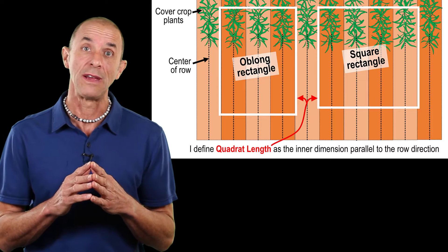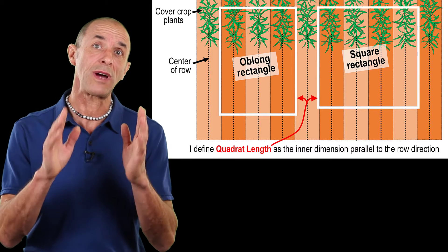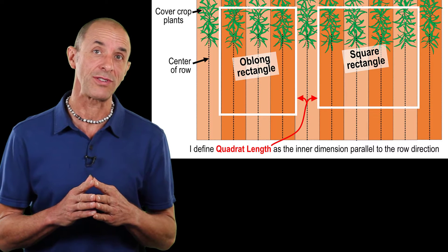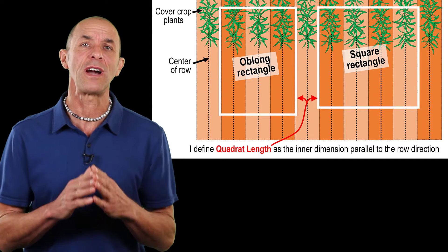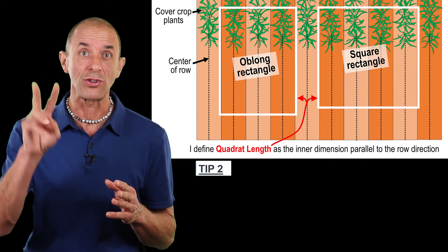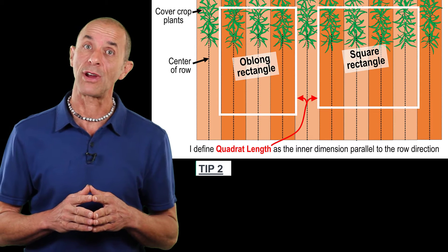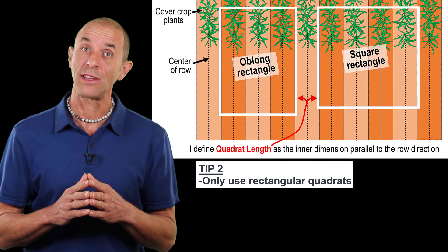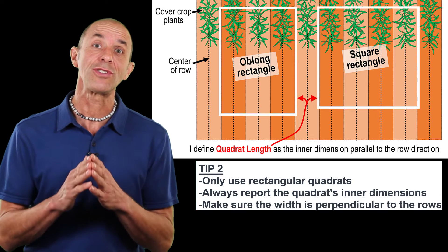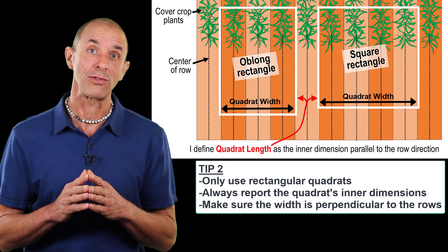Quadrats are often rectangular, but they can also be other shapes, and that's why it's problematic if you just report the area of the quadrat without its dimensions. This is another very common mistake in many cover crop articles. So here's tip number two: if you use a quadrat to sample your cover crops, only use rectangular ones, always report the inner dimensions, and make sure that the quadrat width is perpendicular to the rows.